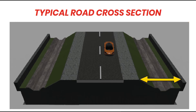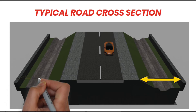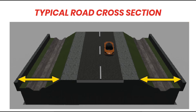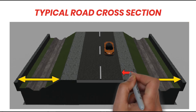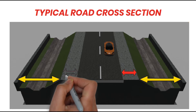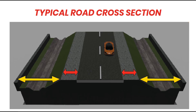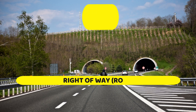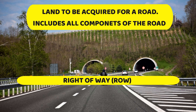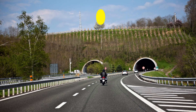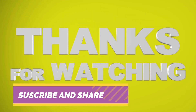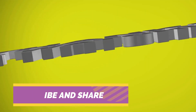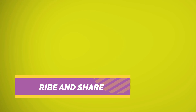This is a typical road cross-section showing the road margin, shoulders, carriageway, and embankment. All these structures constitute a road, and the total area including all these components is called the right of way — this is the land to be acquired for a road. Hope you have a better picture about the components of a road and its elements. Thank you for watching.